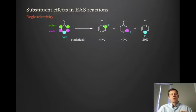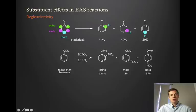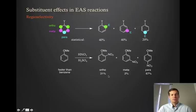But that's not what we see. Looking at a specific example — the nitration of this methoxy-substituted benzene, which is called anisole — this reaction is faster than benzene. When we look at the isomers that come out, we see 31% ortho, 2% meta, and 67% para. So there's definitely a preference for the para, ortho is a distant second, and then the meta is almost non-existent. That's very far away from the statistical mixture we might have expected.